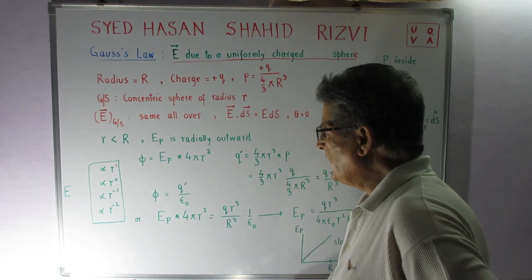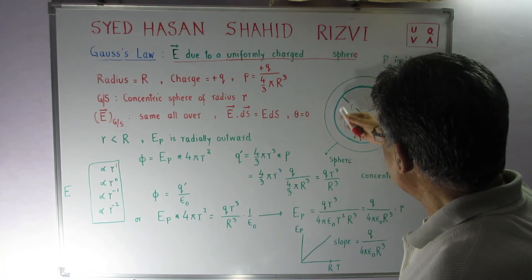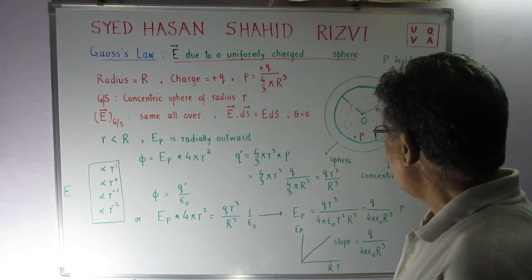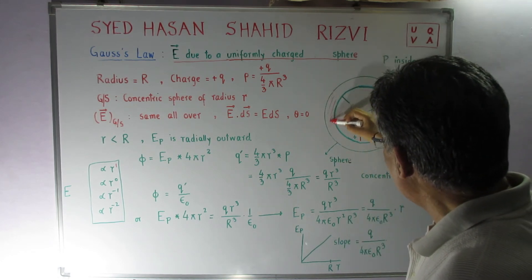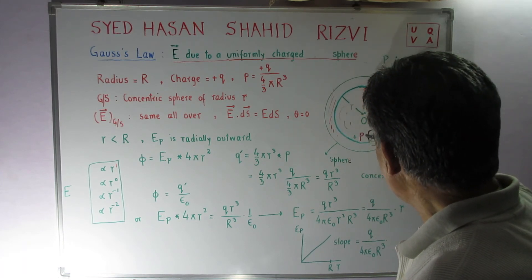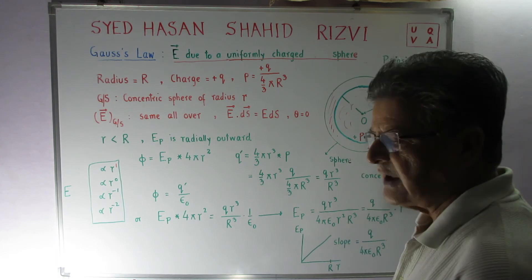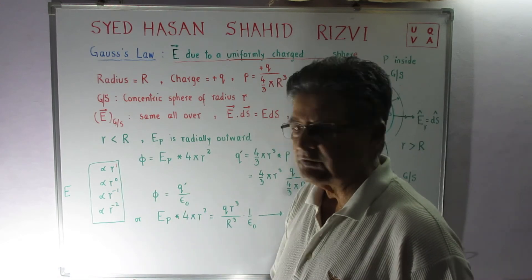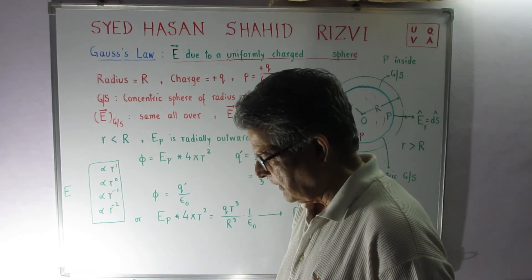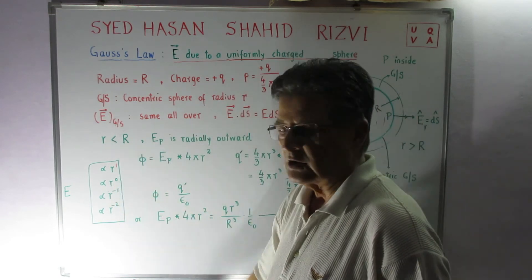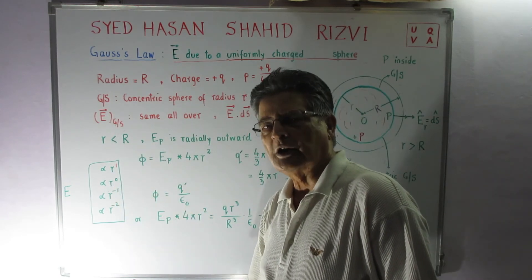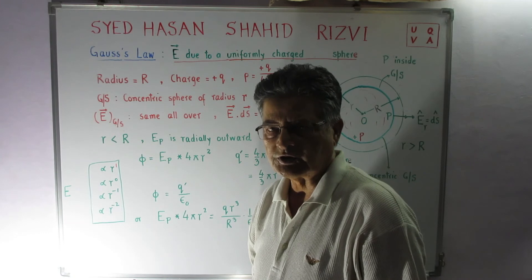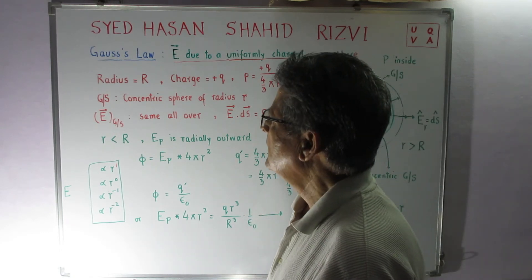A similar analysis was done for the gravitational case, where the outer shell has no contribution and only the enclosed mass contributes. This gives the same proportionality: the gravitational field and acceleration due to gravity at a point inside a theoretically uniform solid sphere is proportional to r.